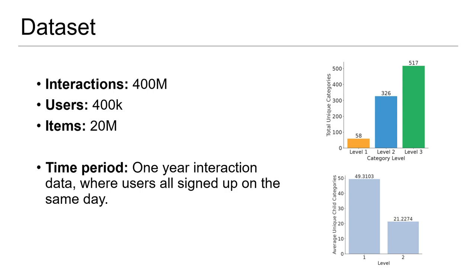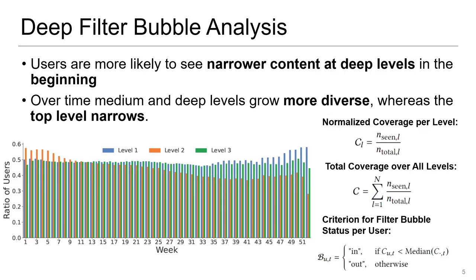To conduct our analysis, we leverage a very large dataset from one of the top short video platforms in China over a one-year period. We first generate a criterion that tells us whether or not a user is in a filter bubble at a given period of time and at each level, and we determine that there are different trends of the formation of these filter bubbles over the year period.